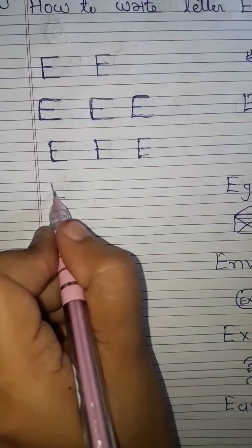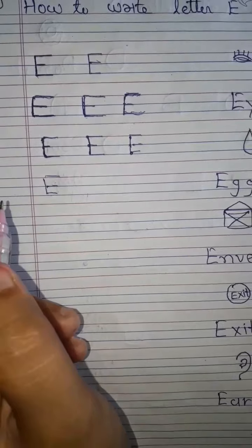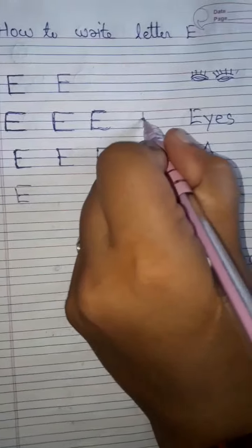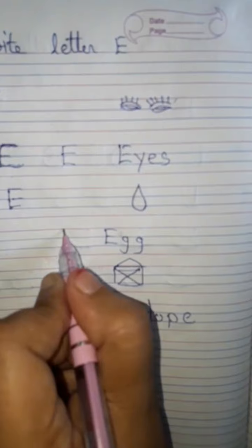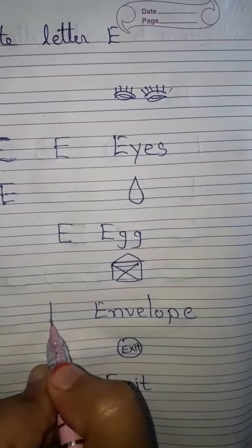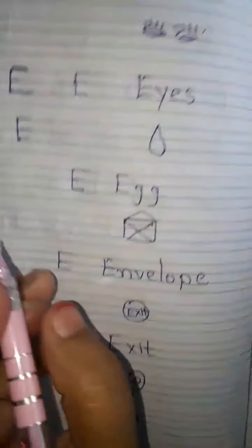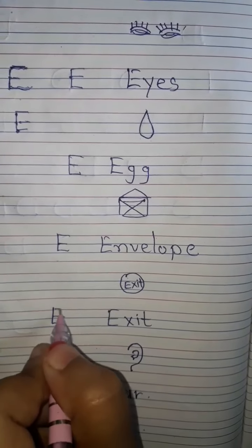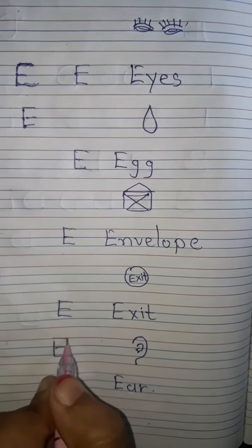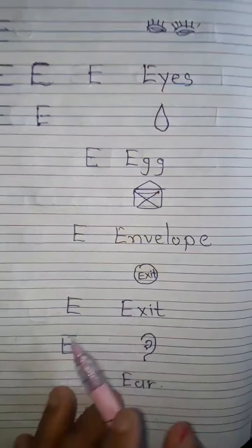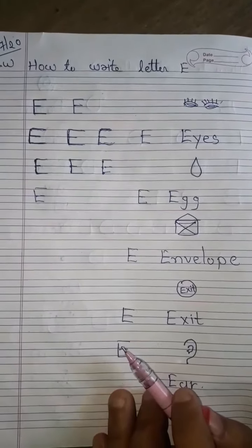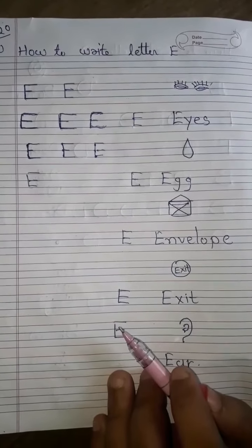ये बनाते समय बच्चे को अलग-अलग sounds में E सिखाओ — जैसे कि E for ice, E for egg, E for envelope, E for exit, E for ear। ऐसे बच्चे को अलग-अलग sounds में E सिखाओगे तो बच्चे को आसानी से E लिखना आ जाएगा।